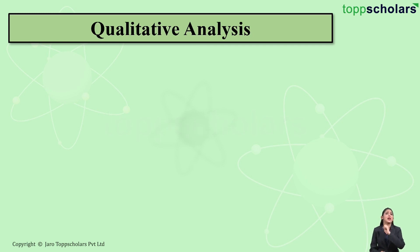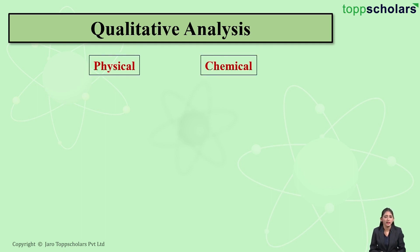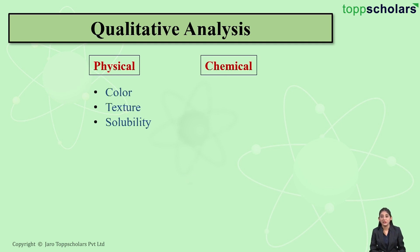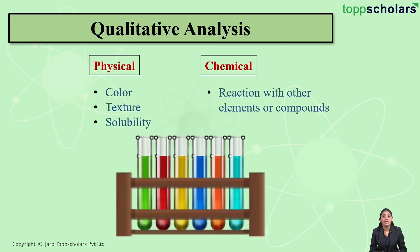First, let us start with qualitative analysis. What do we mean by qualitative analysis? If I give you an unknown substance and tell you to identify it, how are you going to do that? By doing some physical and chemical tests. Physical tests generally involve color, texture, and solubility, whereas chemical tests involve reaction with other elements or compounds.